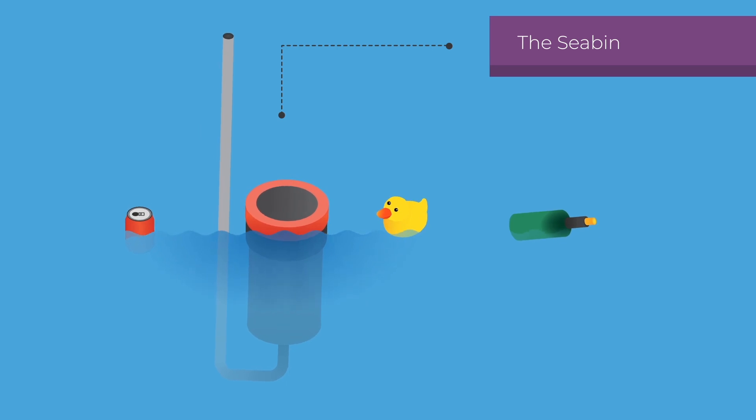For instance, this system for the cleanup of beaches and docks is based on a partially submerged container with a pump that sucks floating rubbish. Together with the pump, it features a catch bag.